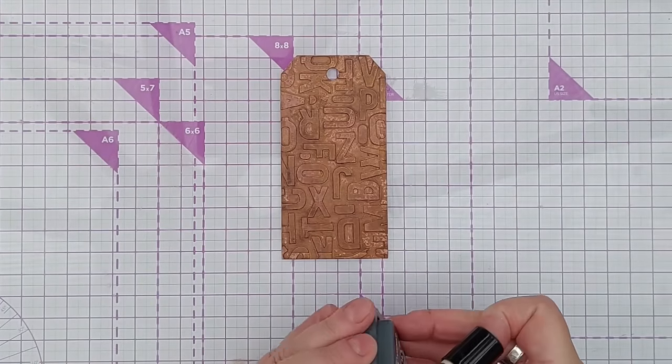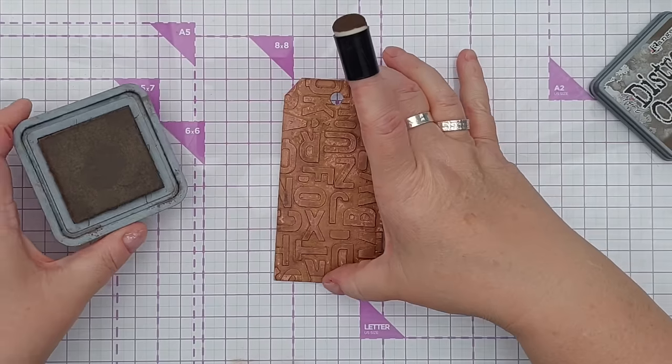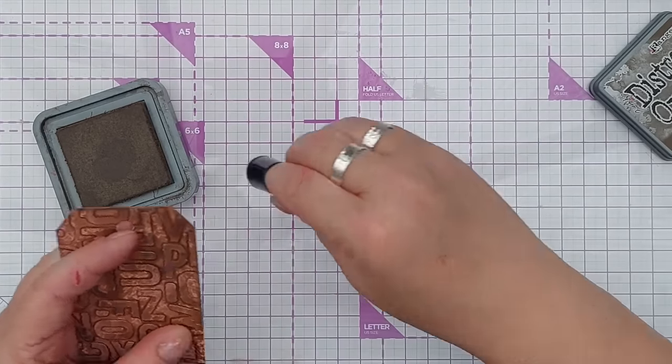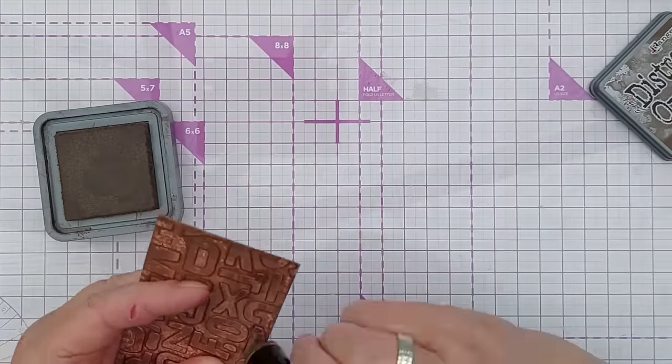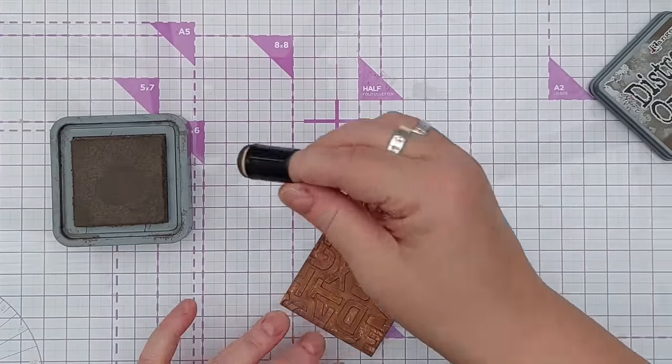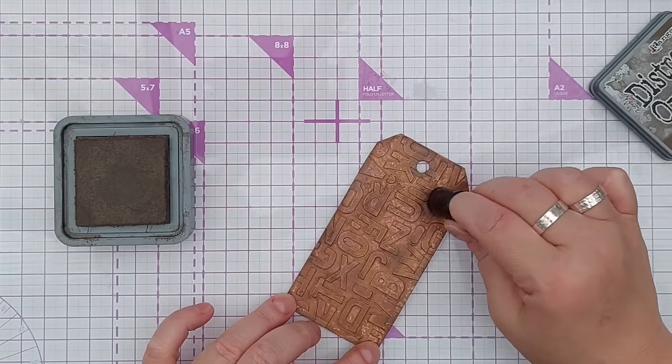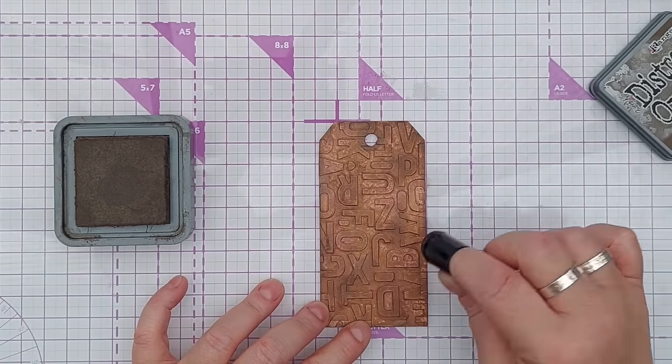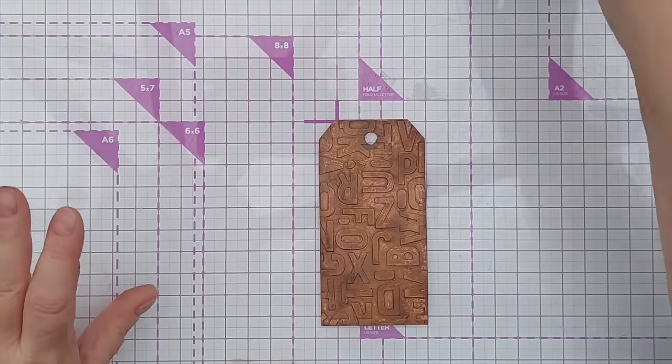So there's our tag. I just want to give it a little bit of definition around the edge so I'm going to take my darkest brown distress oxide, Walnut Stain, and daub it with a sponge just around the edge. If you want you could go in and add a few darker spots in a few places. This will cover any lustre but that's not necessarily a bad thing. It's nice to have a bit of variation across something like this.